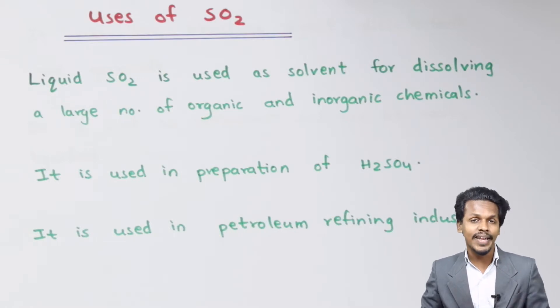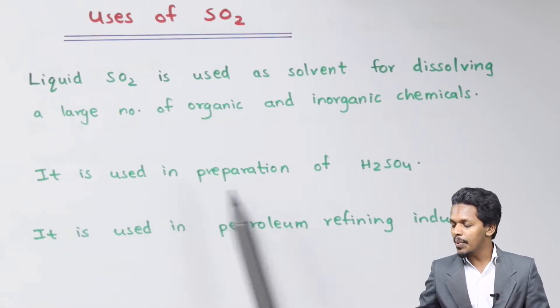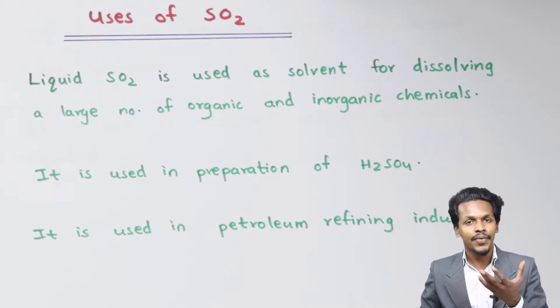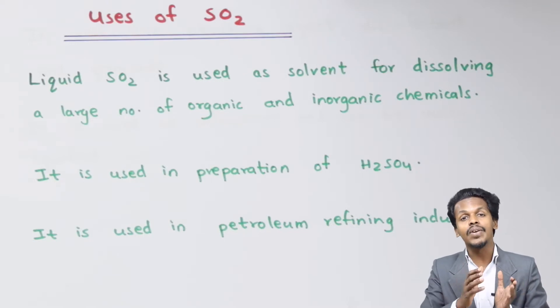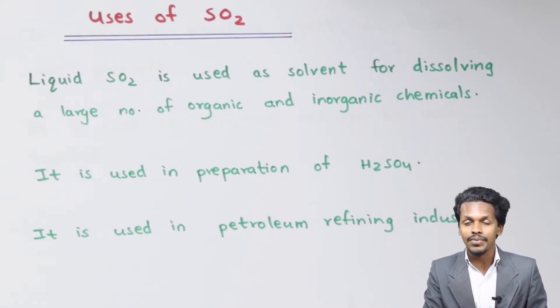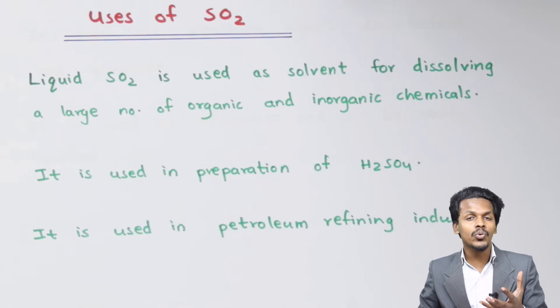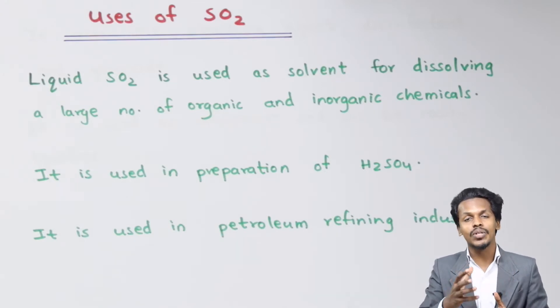Let us talk about the next point. It is used in the preparation of H2SO4. The reason behind that is, first, SO2 in presence of a catalyst, that is V2O5, vanadium pentoxide, along with O2, it will convert the SO2 into SO3, and that SO3 will be very helpful to prepare H2SO4.